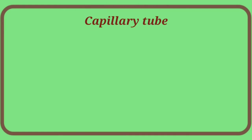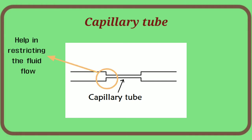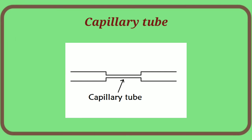Another way is a capillary tube. What is a capillary tube? We use a pipe with a very small diameter. Fluid flows in from one side through a larger pipe, gets restricted through the capillary tube, and after the capillary tube the pressure drops. This is another way to achieve the throttling process.